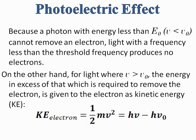So we have an equation for the kinetic energy of the electron. The kinetic energy of the electron is equal to one-half m v squared, which is equal to h nu minus h nu naught.